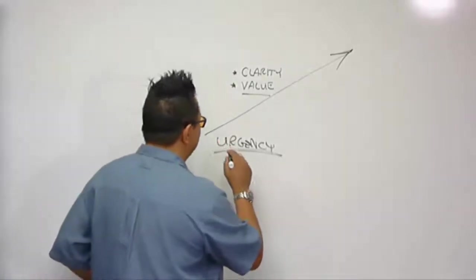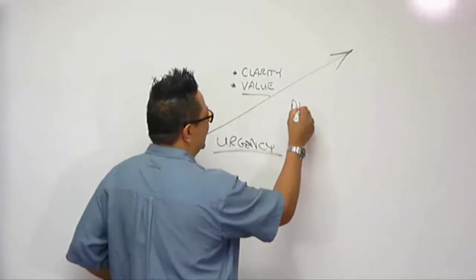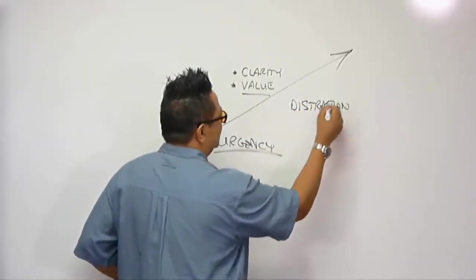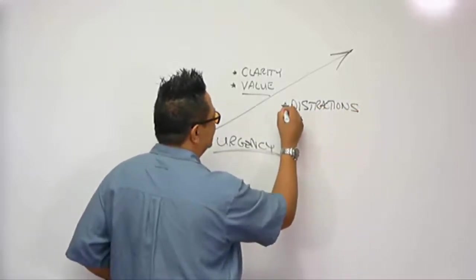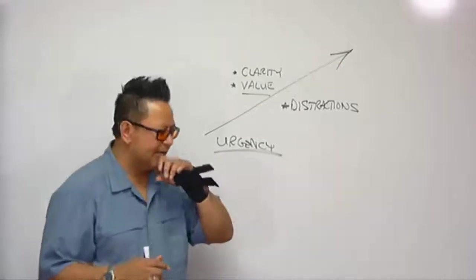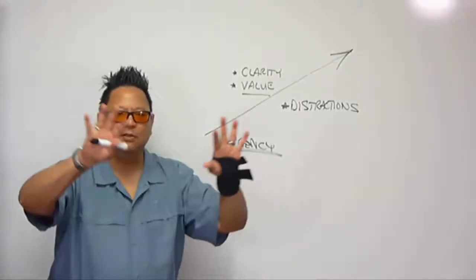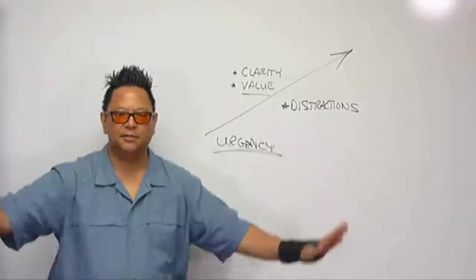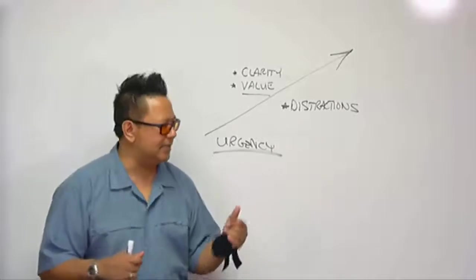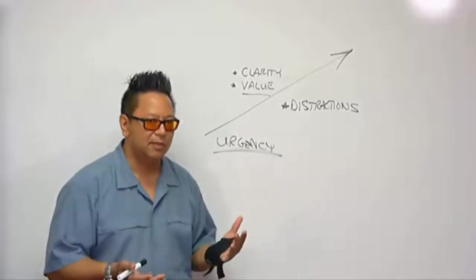The other thing that helps increase urgency is you remove distractions. You remove distractions from the client. What are distractions? All the other crap. Remember last week we talked about the client bringing up this policy and that policy, and I've got this issue and that issue.